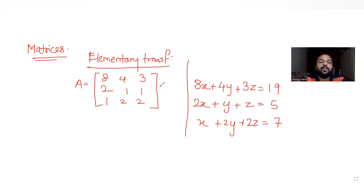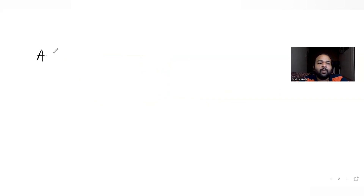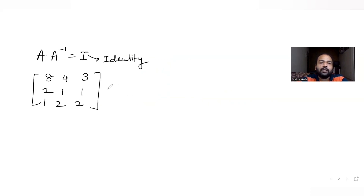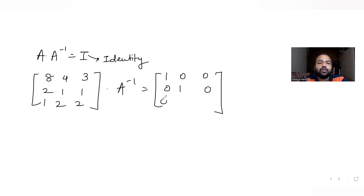Now let's use elementary row transformation to find the inverse of matrix A. By the identity rule, A times A inverse equals I, where I is the identity matrix. So A is [3,2,1; 1,1,1; 2,2,2] and A times A inverse equals I, which is [1,0,0; 0,1,0; 0,0,1].